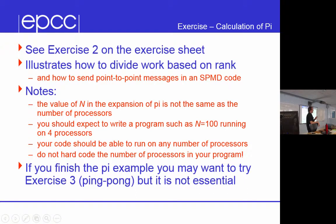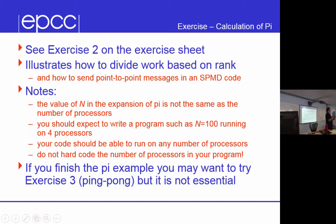If you know that N is 840, you need to know what subsection of the summation — which goes globally from 1 to 840 — you have to do. You need to know the size to determine what the chunk sizes are, and you need to know your rank to know which chunk to do.